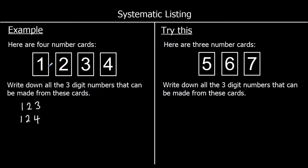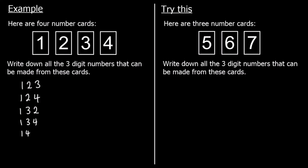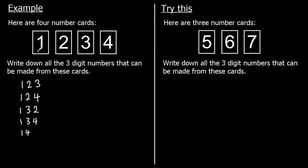Then we could try with one hundred and thirty something. Still with one in the hundreds and three in the tens, we could have a two or a four in the ones. We could also have four in the tens, giving us one hundred and forty two or one hundred and forty three. So those are all the options with one in the hundreds.